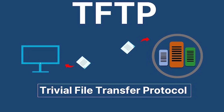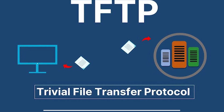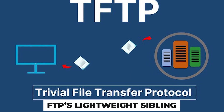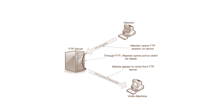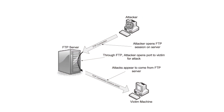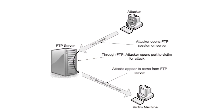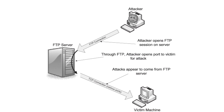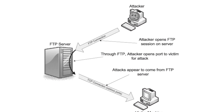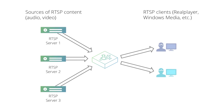TFTP, or Trivial File Transfer Protocol, is FTP's lightweight sibling. It's like leaving a box of documents on your porch for someone to pick up — no security, no authentication. Convenient but risky if sensitive information is involved.